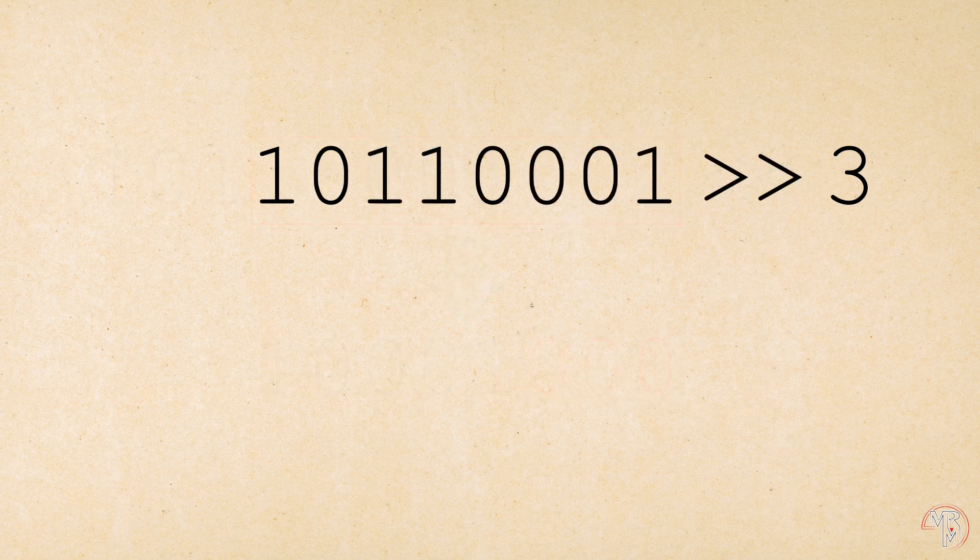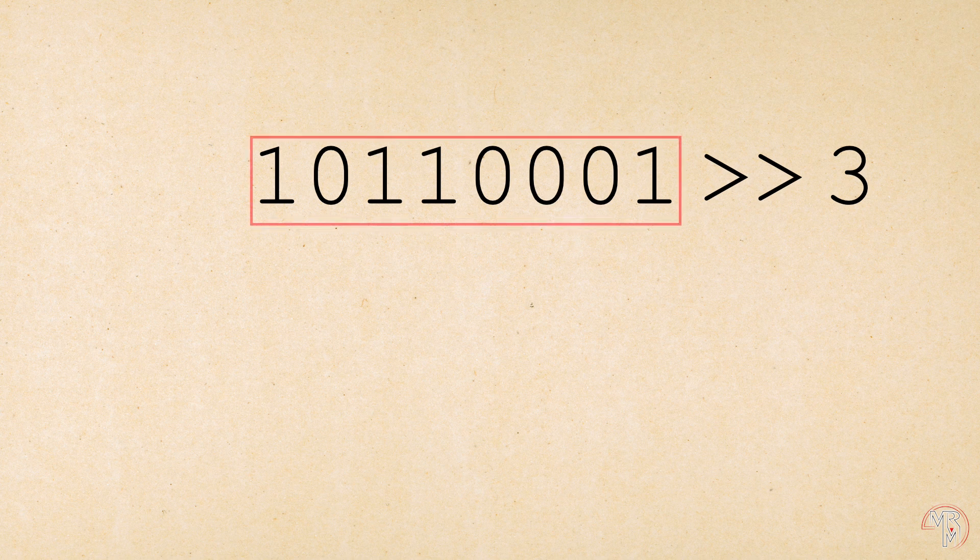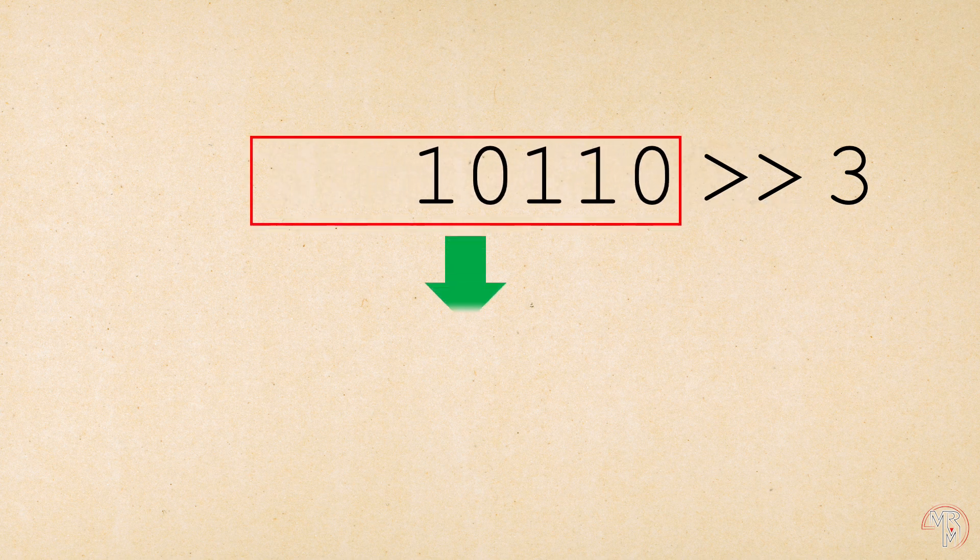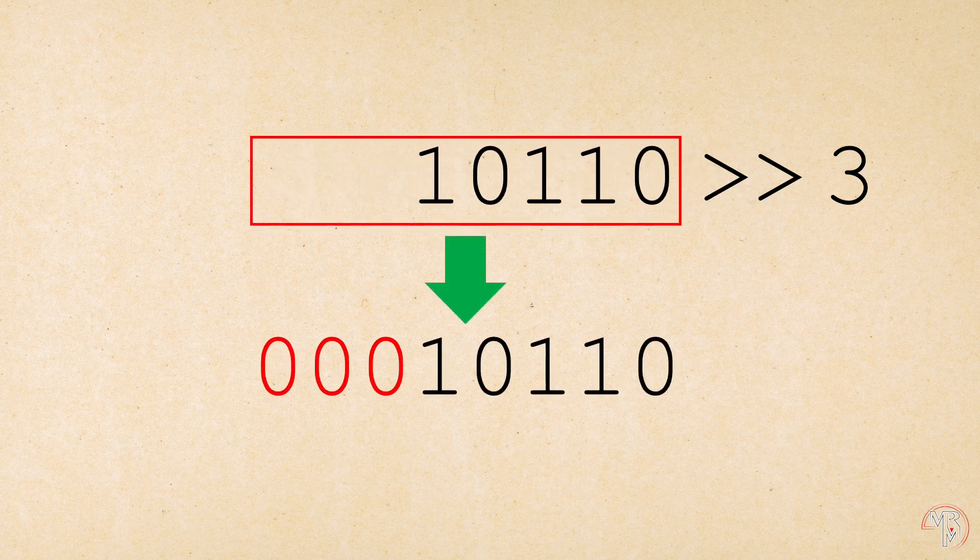Now, if we shift the same binary sequence to the right by the same three places, we will get a sequence that looks like this. What's important to note here is that what you see on the screen is an example of the logical right shift, which works the same way as the left shift.